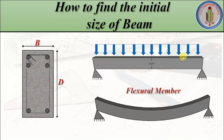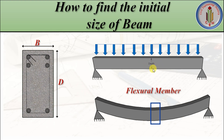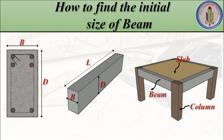When the load is applied on the beam, it bends — as you all know, the beam is a flexural member; flexure means bending. Since it is a flexural member, when the load is applied, depth is the predominant factor in beams when compared to width.